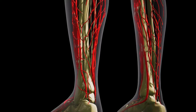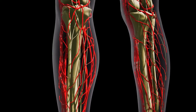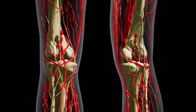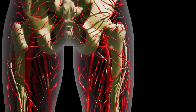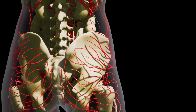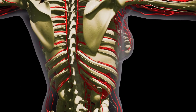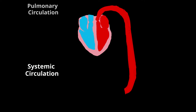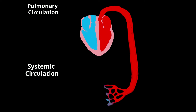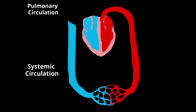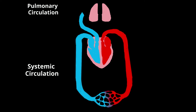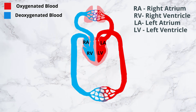Humans have a closed circulatory system in which the blood pumped by the heart is always circulated through a closed network of blood vessels. With each beat, the heart pumps blood into two closed circuits: the systemic circulation and the pulmonary circulation. The two circuits are arranged in series where the output of one becomes the input of the other.